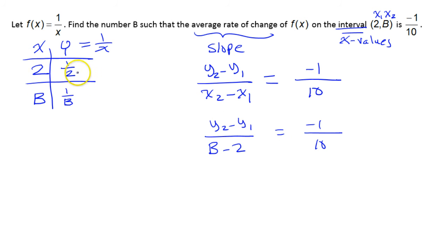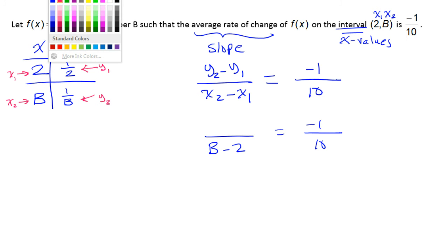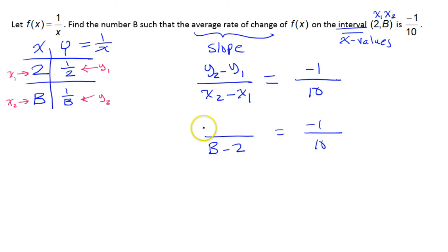So let's substitute these values into the formula. We're going to think of this as y1, and this as y2. This was x1, this was x2. So, if I put these into my formula, y2 minus y1 becomes 1 over b minus 1 half. So now I've got an equation that has one variable, just b. If I can solve this equation for b, then I am golden.